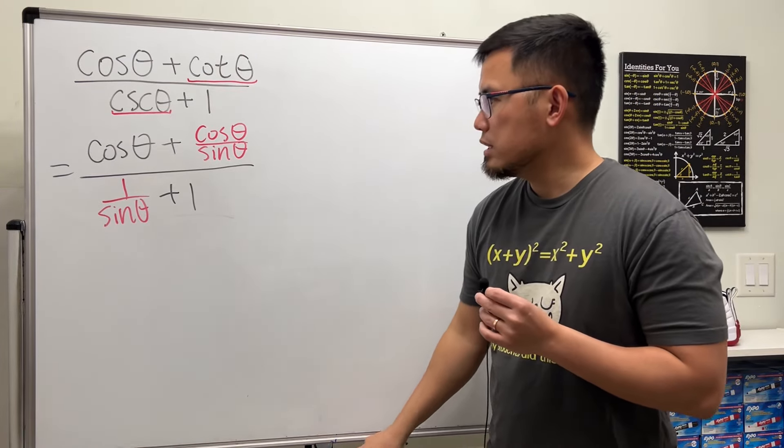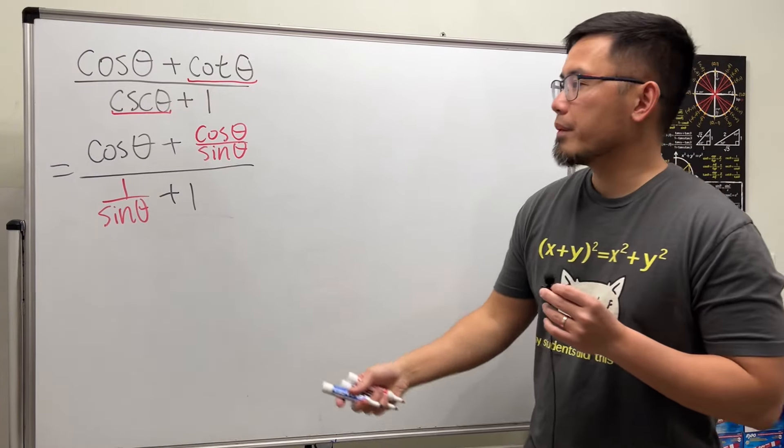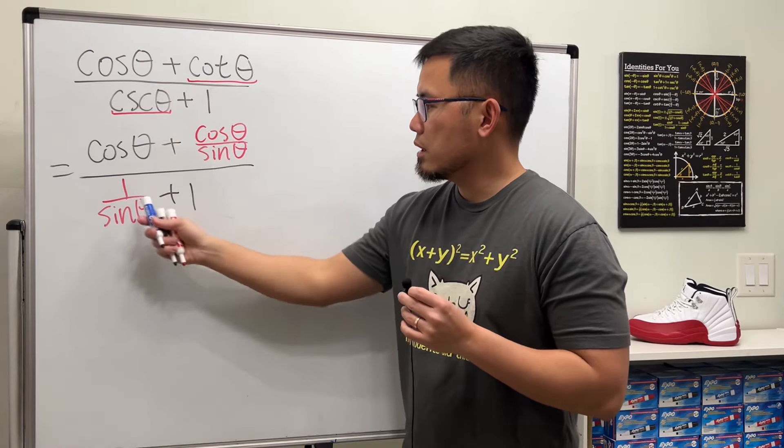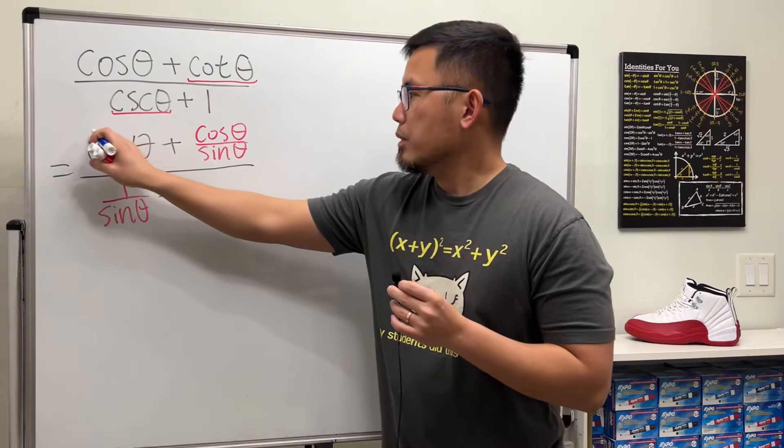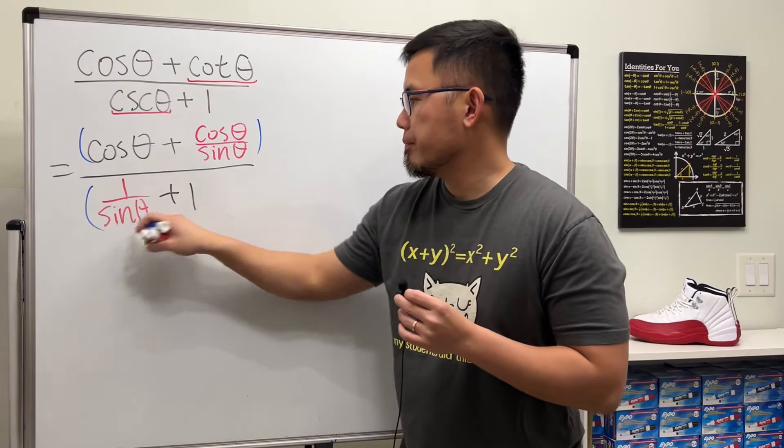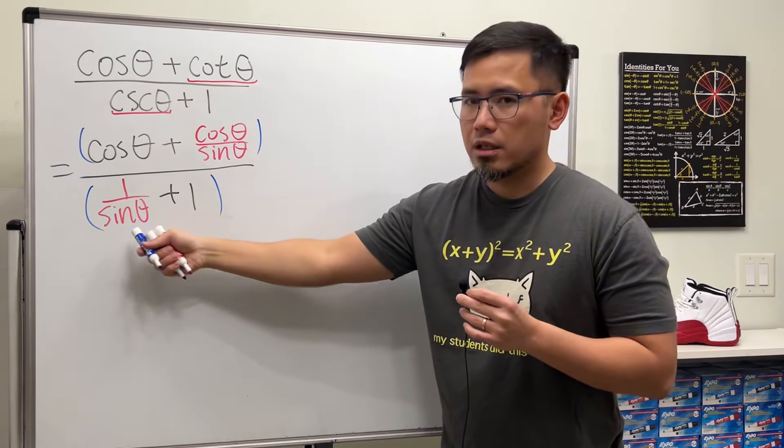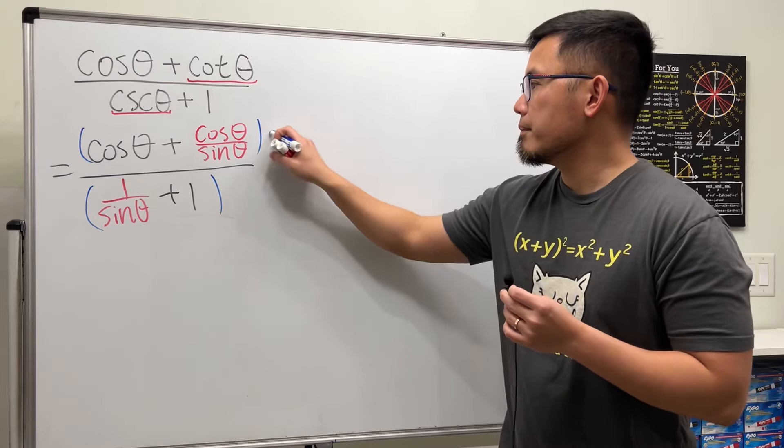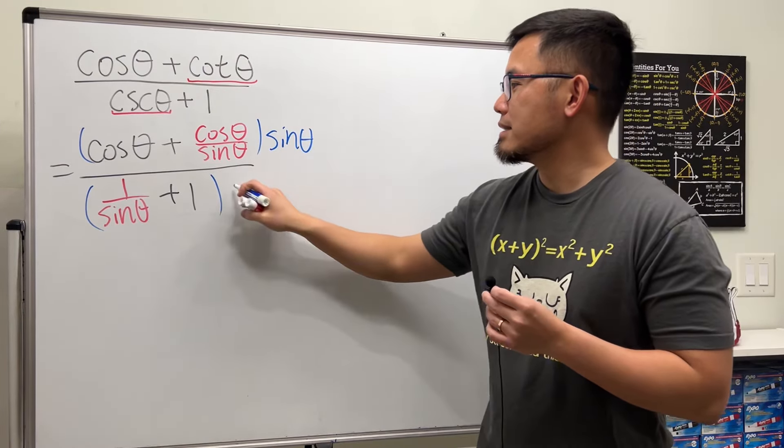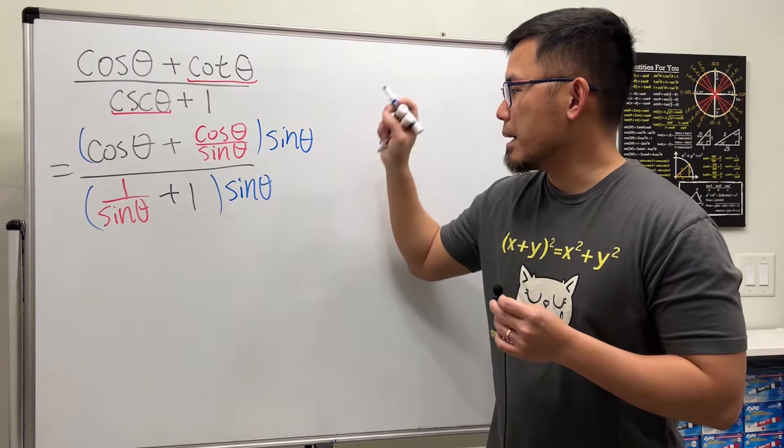After this, we see that we have a complex fraction, meaning we have a small fraction inside of a big fraction. So I'm going to multiply the top and bottom by the common denominator, which happens to be sine theta. Let's multiply by sine theta on the top and also on the bottom.